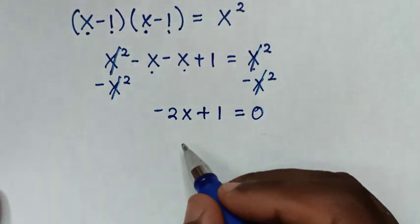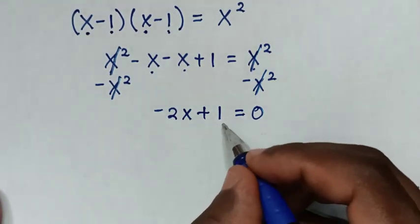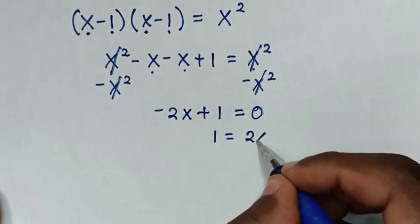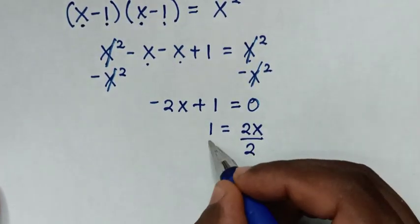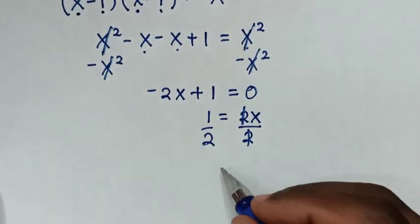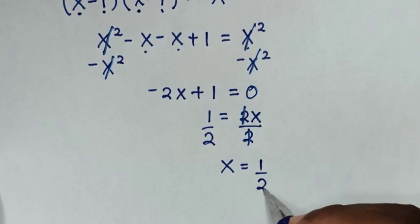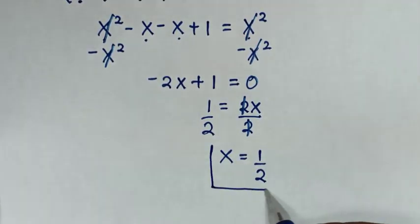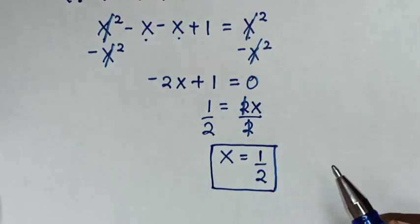From here, we take the negative 2x to the right side, so 1 equals 2x. Then we divide by 2 on both sides — this and this will cancel — giving us x equals one half. So this is the final answer for the value of x.